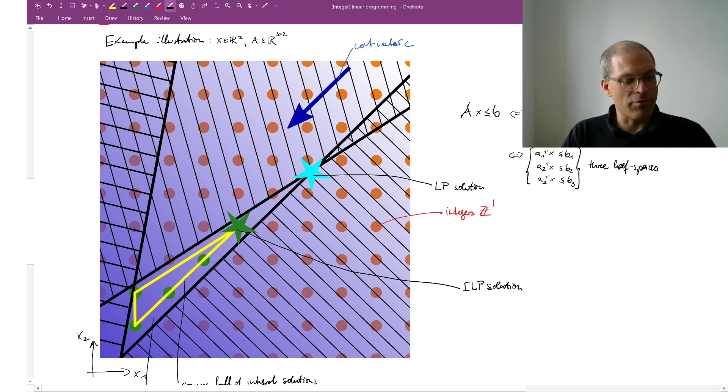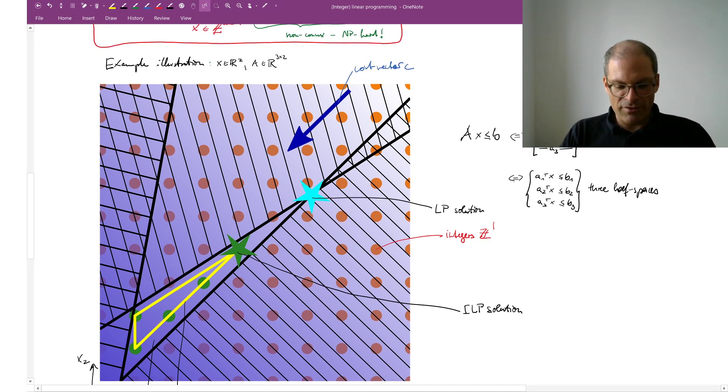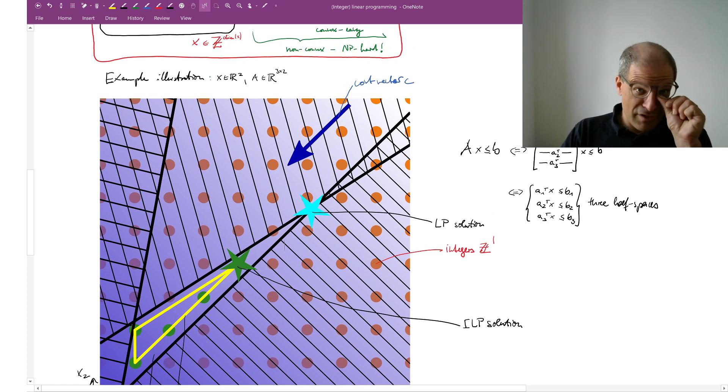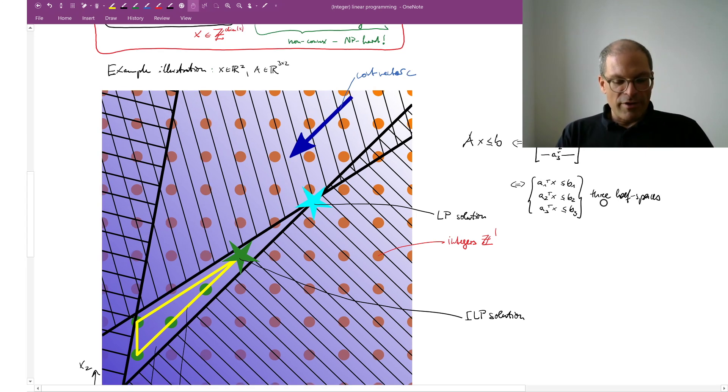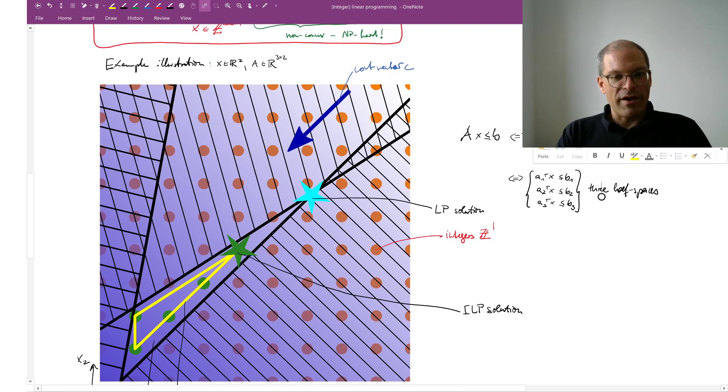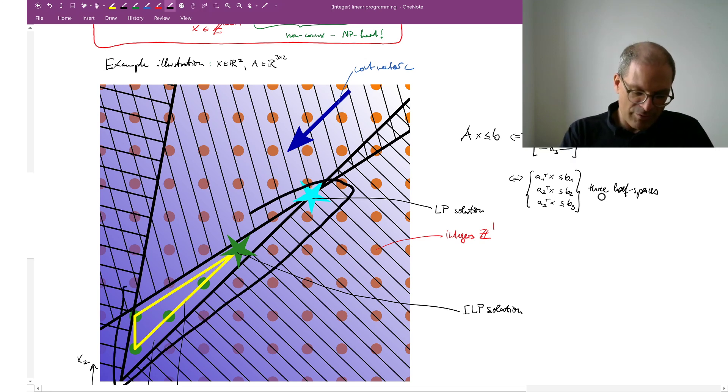All right, so much for linear programs. But sometimes, when we have integer linear programs, we have these integrality constraints. So this was here in the equation above, this thing here. It means the eligible solutions are the points in a Cartesian lattice. The points of the Cartesian lattice here in two dimensions I have indicated by the position of these red dots.